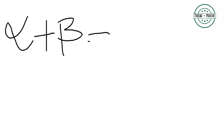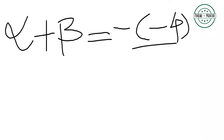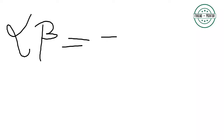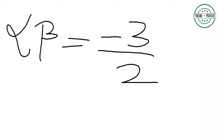Alpha + beta क्या होता है — alpha + beta होता है minus b by a, यानि कि minus of minus 4 divided by 2, that is minus minus cut, 2s are 4, यानि कि answer है alpha + beta is 2. Alpha × beta is c by a, the value of c is minus 3 and the value of a is 2, so it is minus 3 by 2. And question number 1 is done.